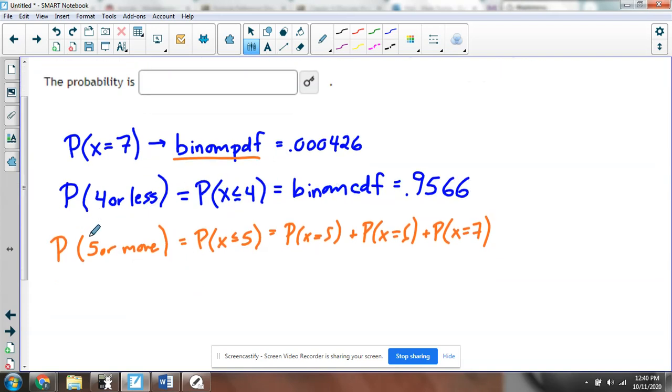Or you can use binomial CDF and say the chance of getting 5 or more is just the complement of getting 4 or less. So I can do probability of X being less than or equal to 4 and subtract that from 1. So those are the only other possibilities. If I want to know 5 or more, I can do 1 minus something being less than or equal to 4.